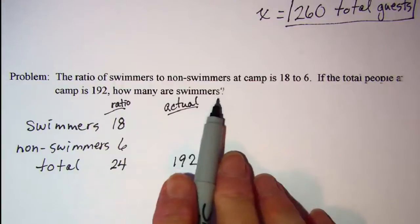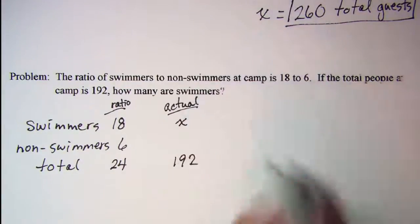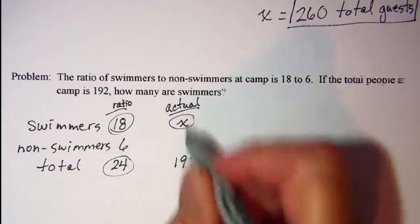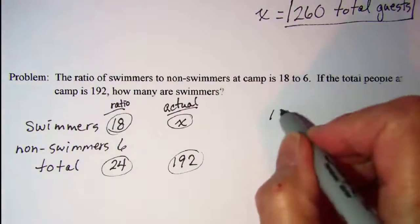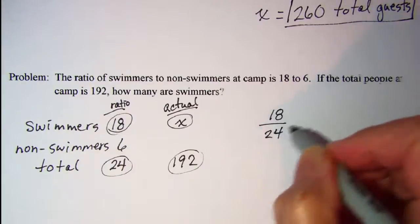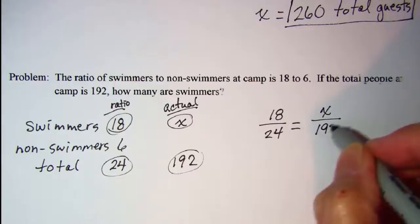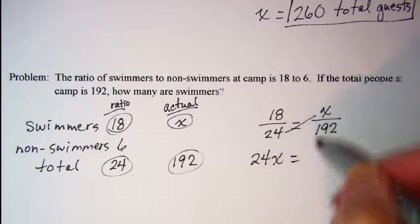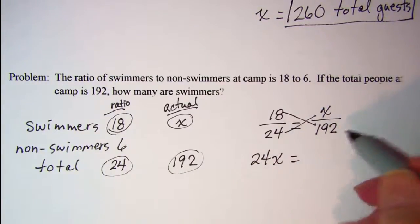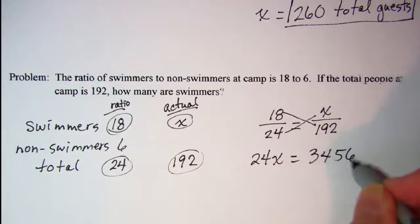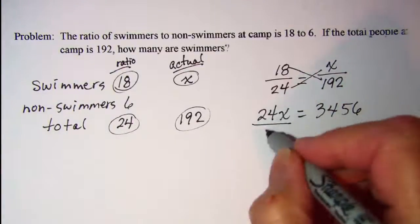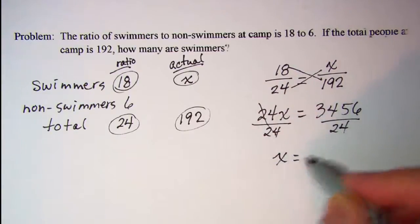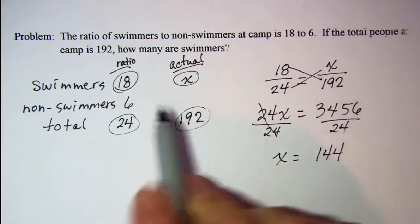The question is how many are swimmers, so I want to find the actual number of swimmers. We'll use these four numbers in a proportion. So I have 18 is to 24 as x is to 192. We're going to find cross products: 24x equals 18 times 192, which is 3,456. Divide both sides by 24, these will cancel, and we have 144 swimmers.